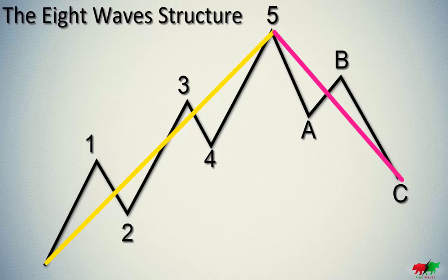As the sequence ABC is the correction of the five-wave formation 1, 2, 3, 4, and 5, to sum up, the waves 2 and 4 also have the three-wave structure ABC.